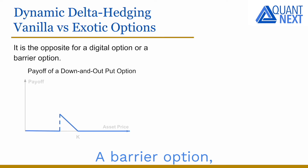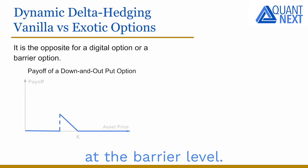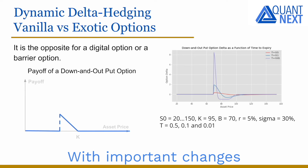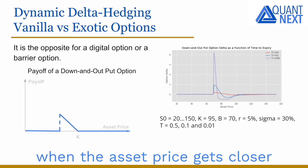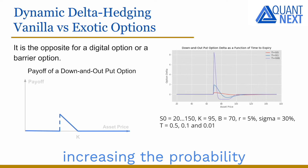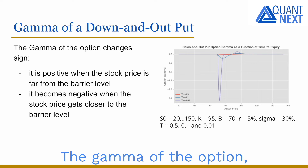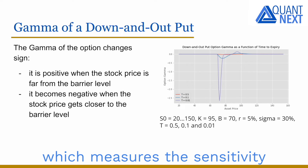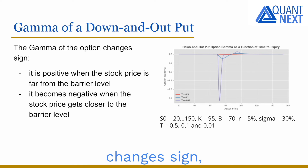A barrier option — in this example a down-and-out put option — has a discontinuity at the barrier level, with important changes of the delta when the asset price gets closer to the barrier level, increasing the probability that the option will be deactivated. The gamma of the option, which measures the sensitivity of the delta to the stock price, changes sign, which makes it difficult to manage.